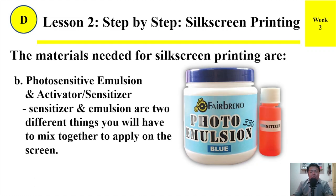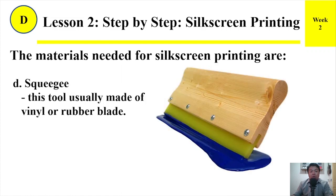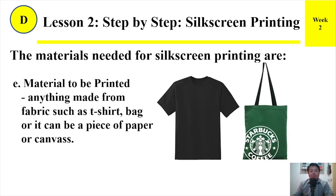B. Photosensitive emulsion and activator, or synthesizer — emulsion and synthesizer are two different things you will have to mix together to apply on the screen. C. Screen printing ink or paint. D. Squeegee — a tool usually made of vinyl or rubber blade. E. Material to be printed — anything made from fabrics such as t-shirt, bag, or it can be a piece of paper or canvas.